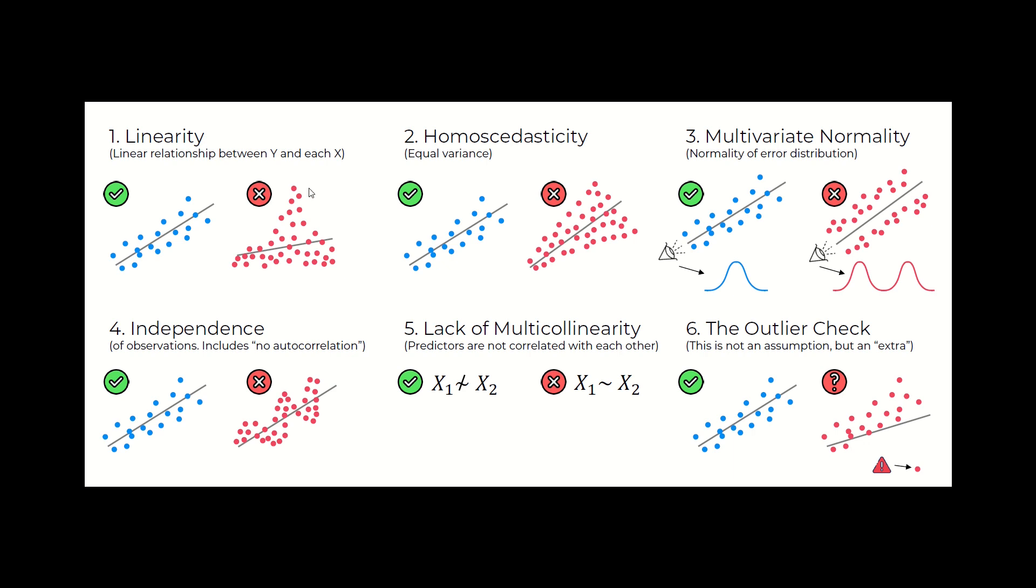The second assumption is homoscedasticity. It's just a complex term, but the meaning is equal variance. You don't want to see this cone type shape here - that's why on the right side there is a cross mark. You don't want to see this cone type shape on the chart, whether it's an increasing cone or a decreasing cone, which would mean that variance is dependent on the independent variable. In this case we won't be using linear regression either.